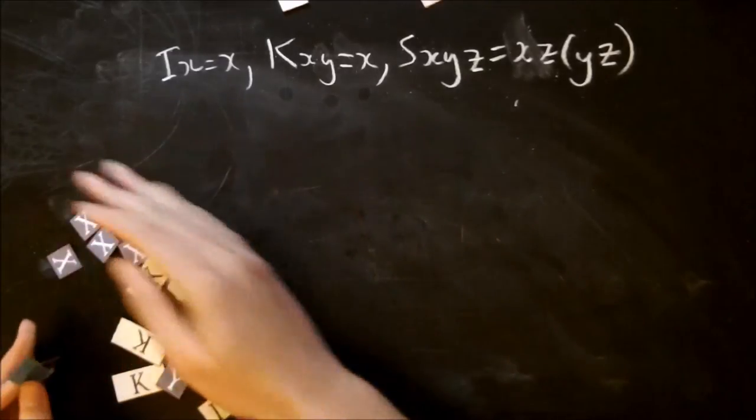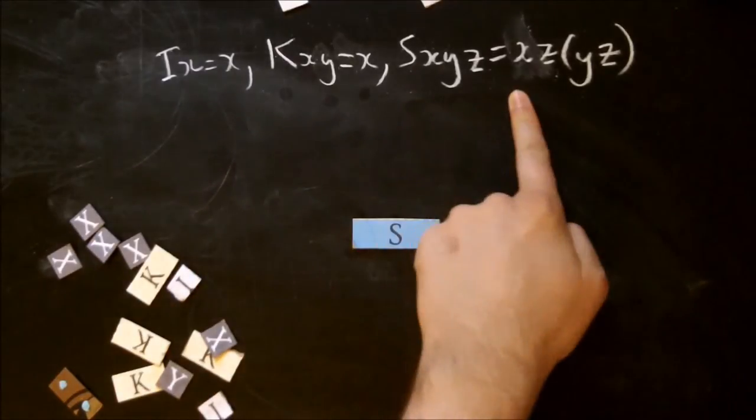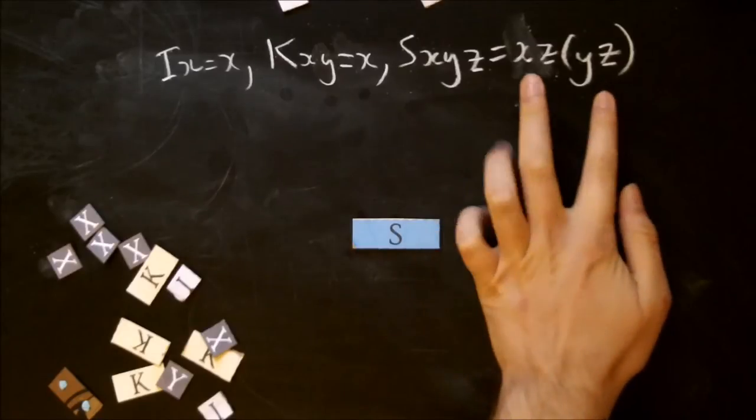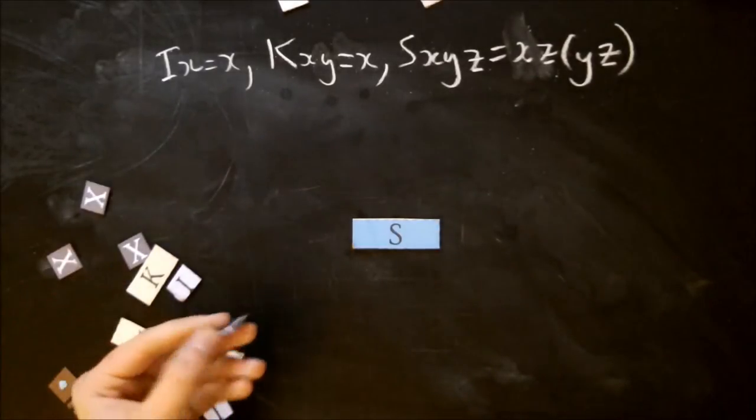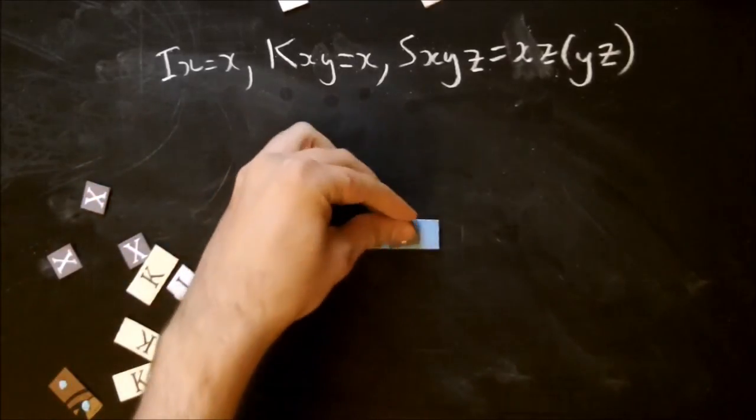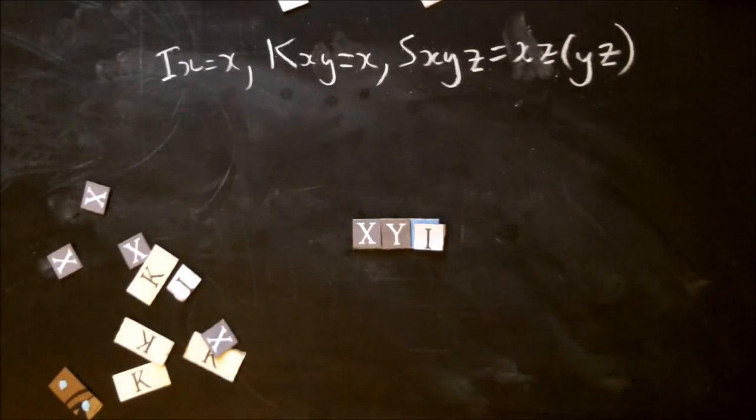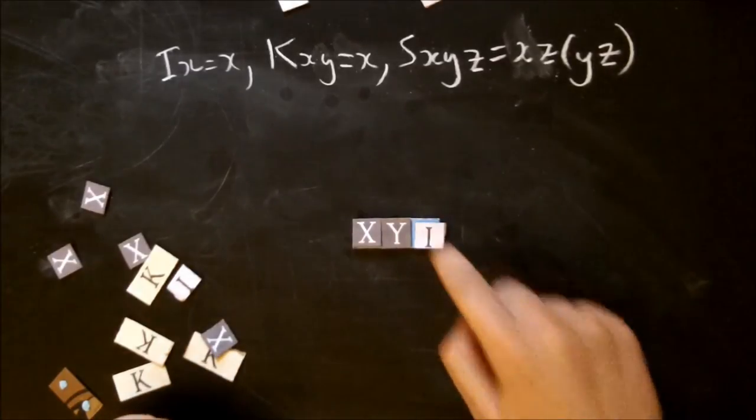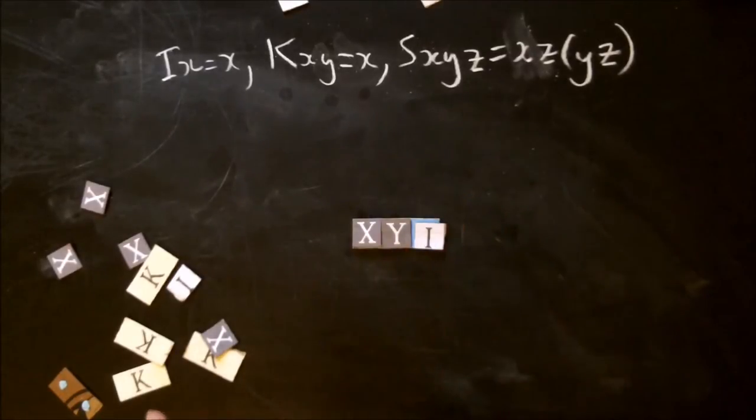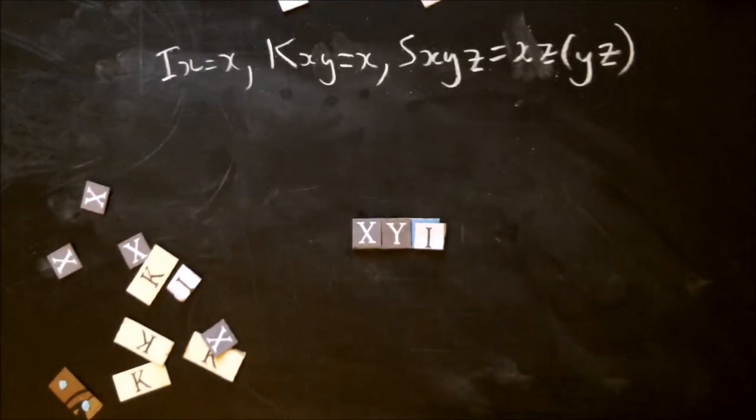Now again, the problem is, with this s-combinator that we've got here, the definition of that needs two copies of the thing on the right. So if I have something like s-x-y-i, and I am aware that x is upside down typography fans, if I have all that, then I need two copies of i. And if this thing on the right here is some mad combinatoric thing, I either need to boil it down to one tile or just copy it, which is laborious.